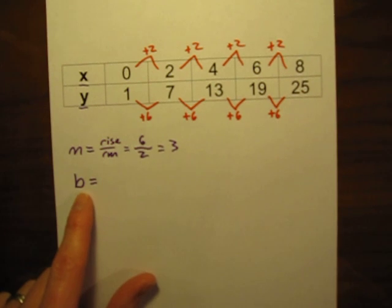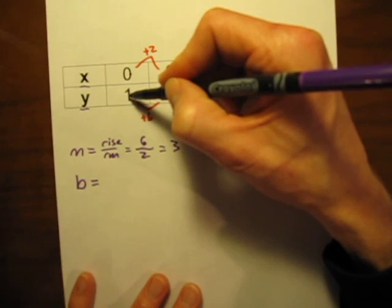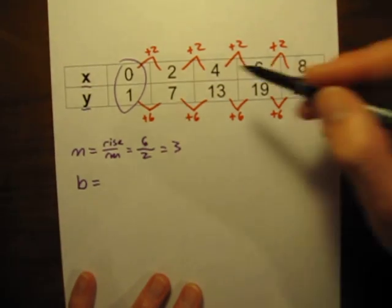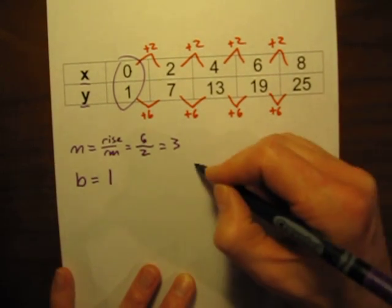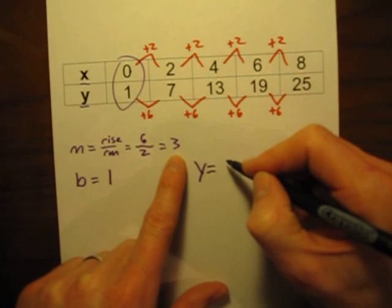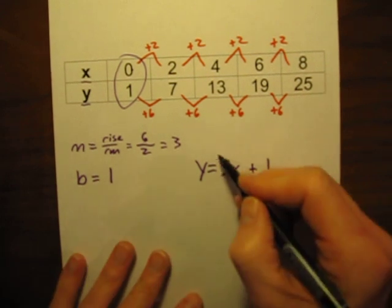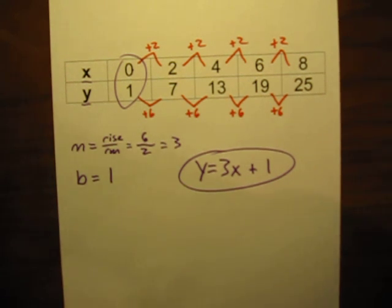For the y-intercept, whenever x equals 0, the y-coordinate is our y-intercept. This time, 0 actually is in the data table. When x is 0, y equals 1, so 1 is our y-intercept. The equation is y equals 3x plus 1. The more you practice writing these linear equations from data tables, the easier it will become.